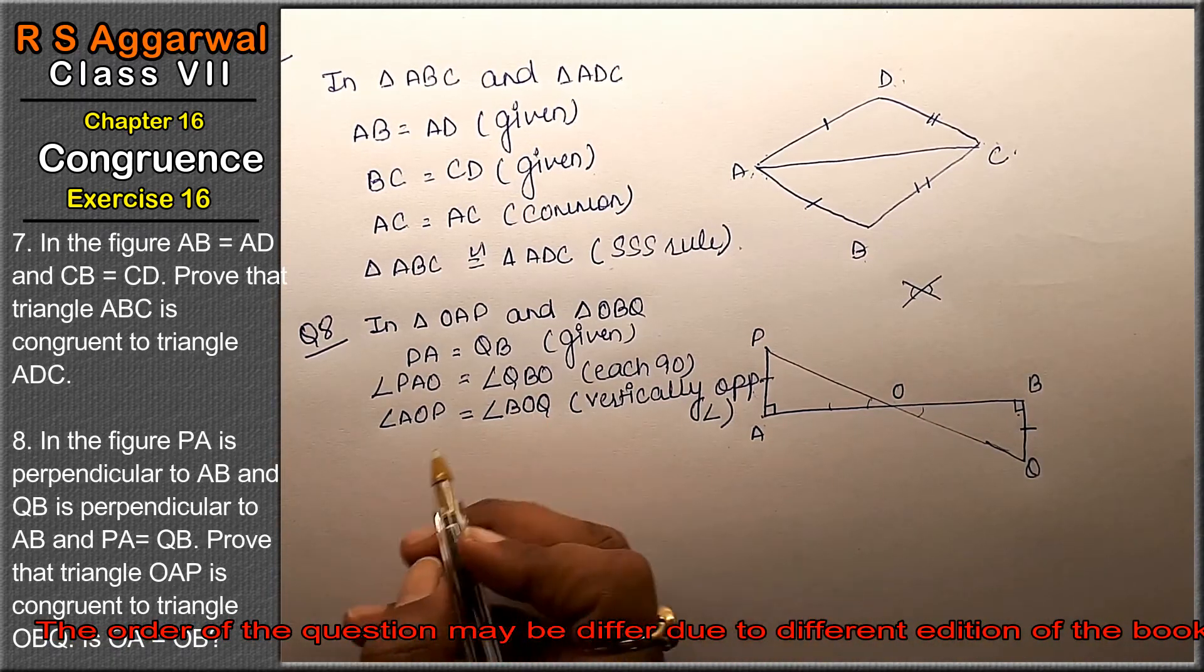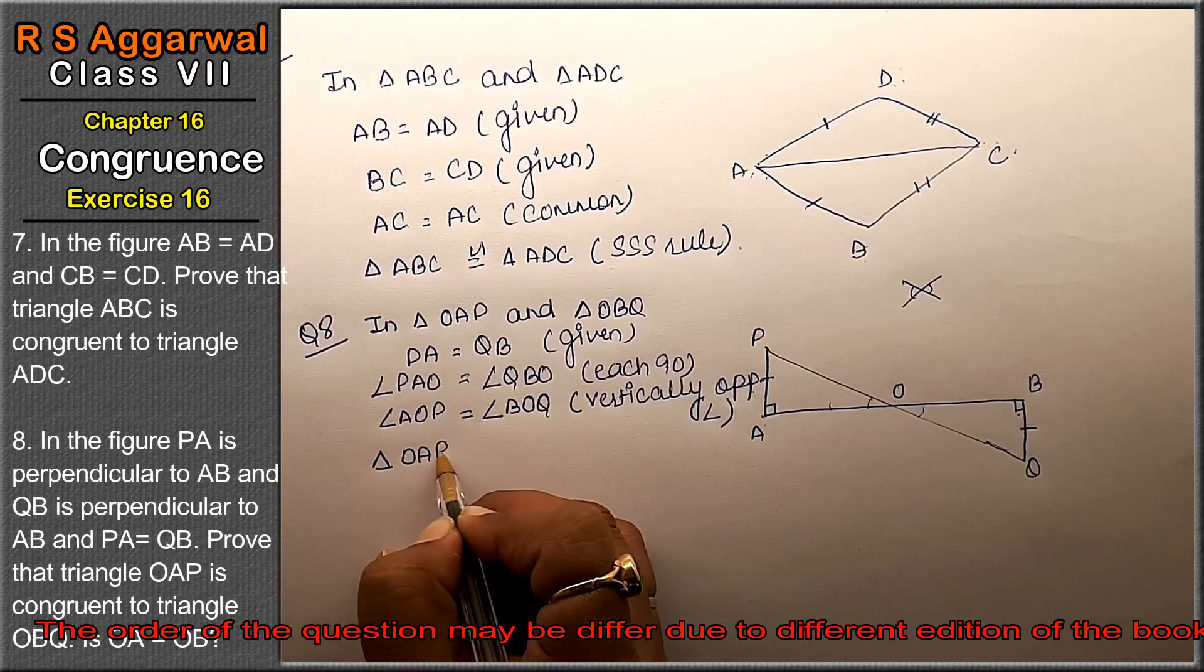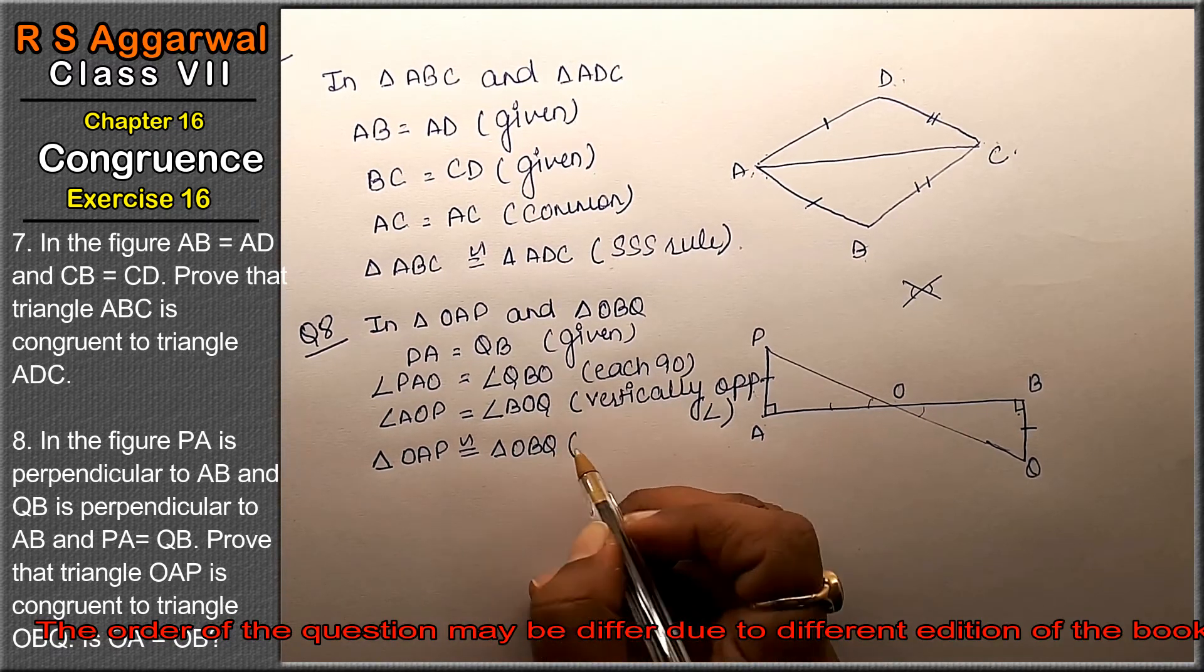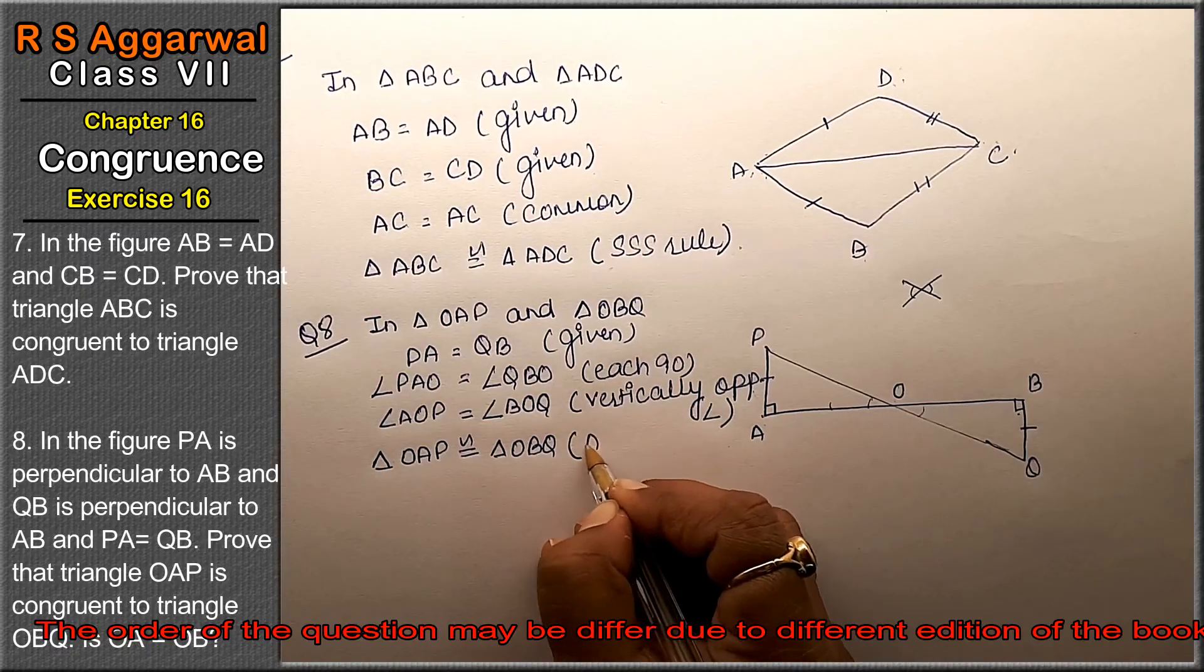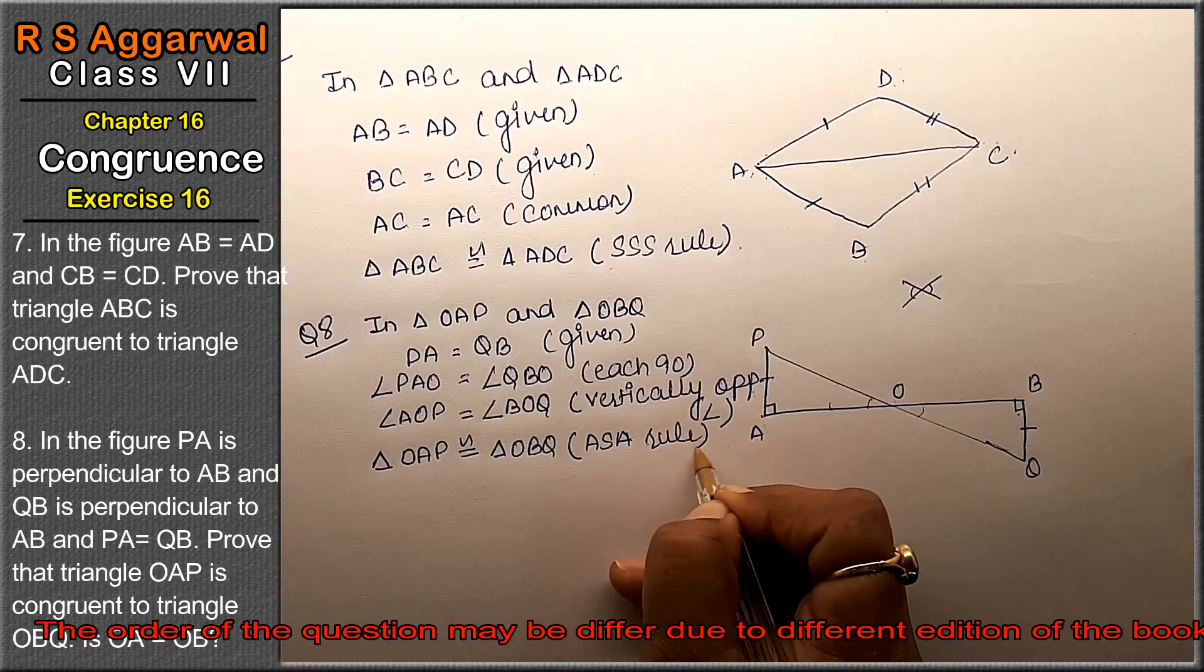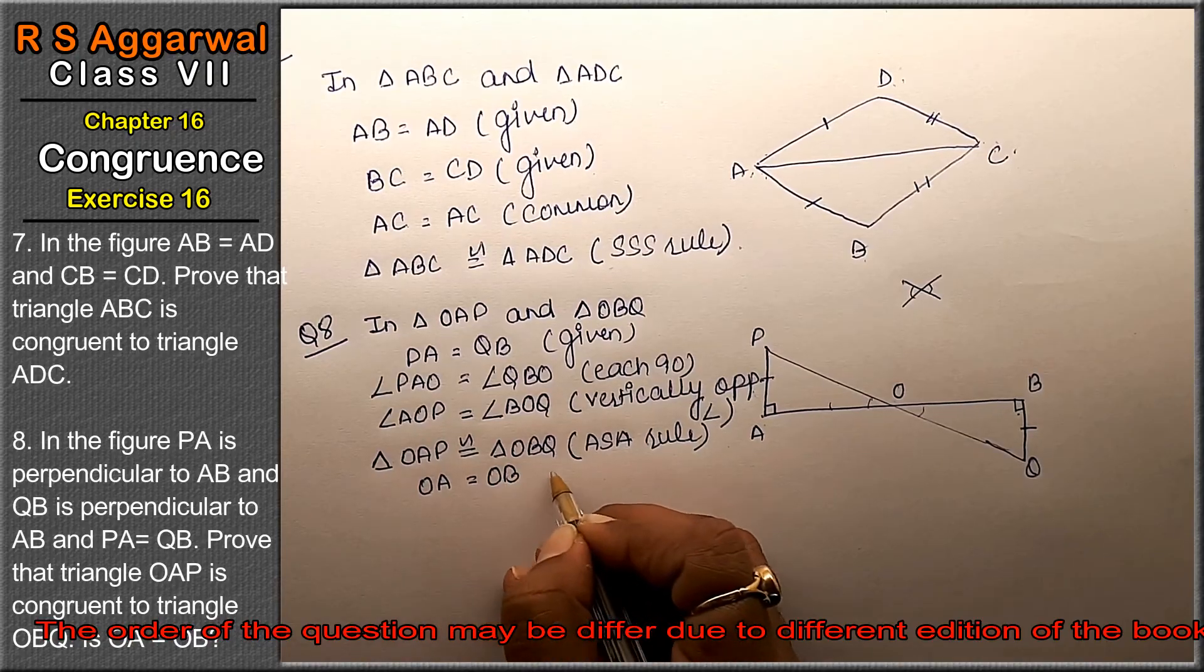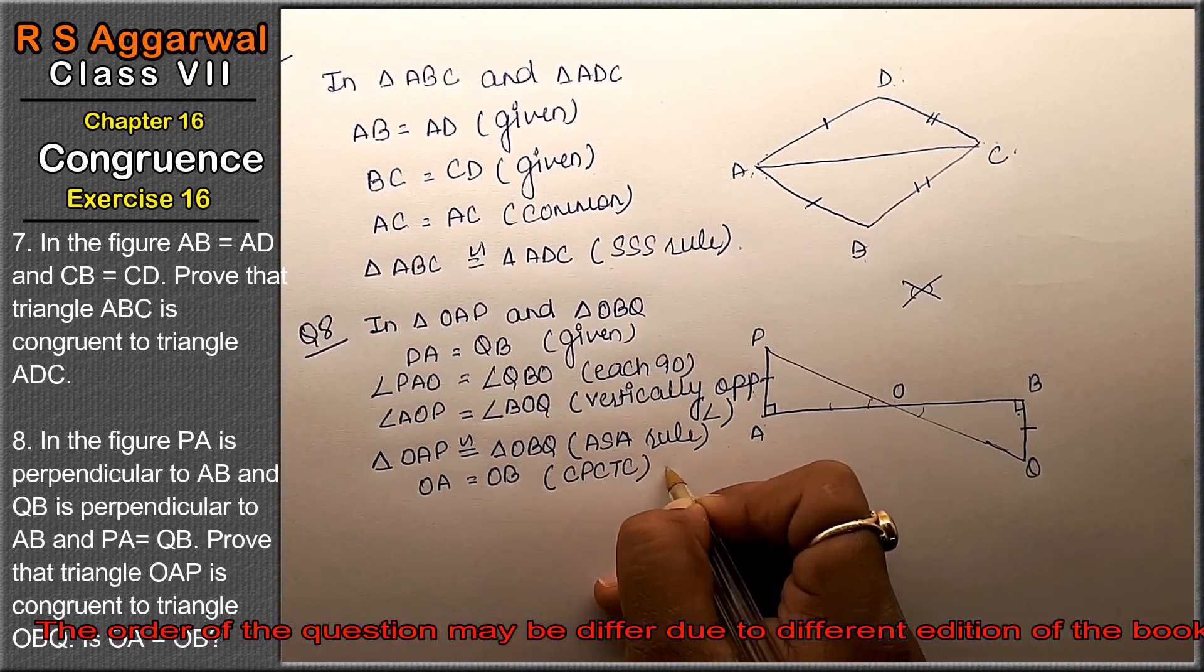So triangle OAP is congruent to triangle OBQ. Which rule? Two angles are equal, so Angle-Side-Angle rule. Now they have asked, is OA equal to OB? Yes, this is equal by CPCTC. Hence proved.